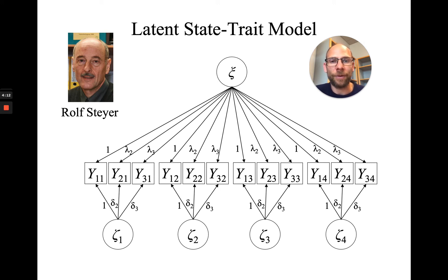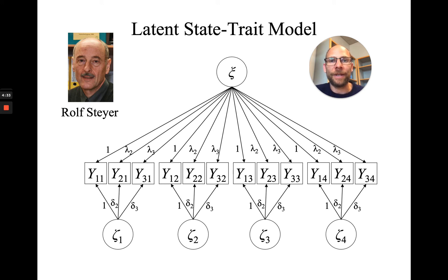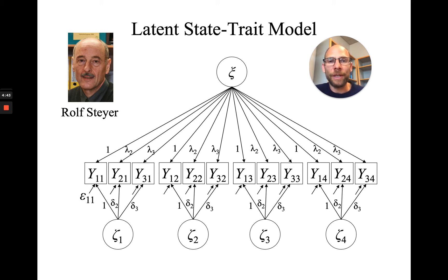The state residuals are uncorrelated with the trait factors, so they represent an independent source of variance. In summary, the trait factor represents stable between-person differences or trait effects, whereas the state residuals zeta reflect situation and/or person-by-situation interaction effects — residual effects at a given situation or time point. We also have measurement error, which reflects purely unsystematic sources of variability and random measurement error.